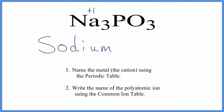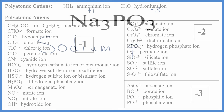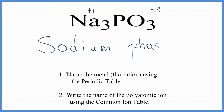That means that the PO₃, that polyatomic ion, is going to have a minus 3 charge — that applies to this whole PO₃. So we go to the common ion table, we're looking for PO₃ 3 minus. We look down, and there we see we have phosphite. So we write phosphite, and we're done.